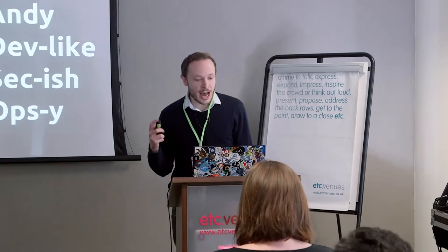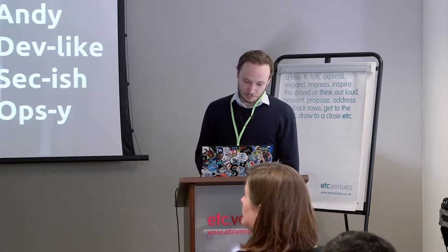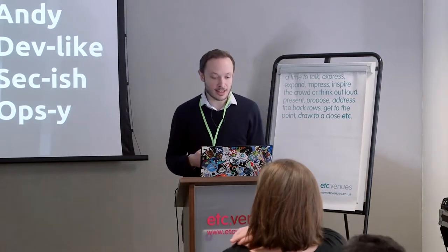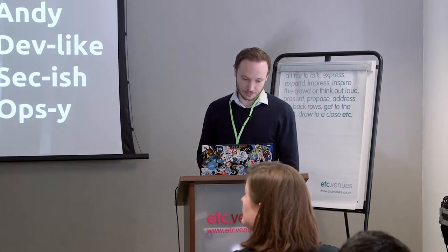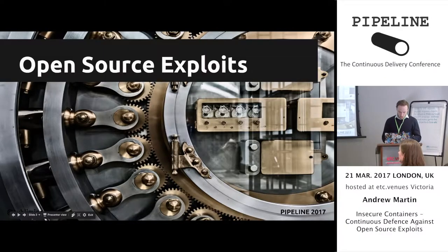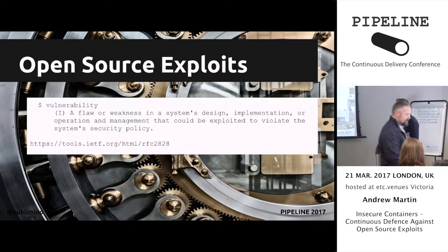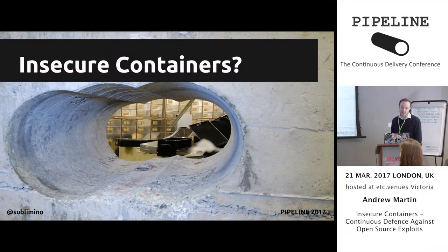I want to talk about how we can protect our users' data when the software that we rely on fails to protect us. I'll start with a high-level description of various attacks and then get into the guts of container security. These slides will be published afterwards. So what are open source exploits? Vulnerabilities in commonly used open source code — a flaw or weakness in a system's design that can be exploited to violate the system's security policy. And the question of insecure containers: do they really contain, what can they contain, and how have they defended against major recent vulnerabilities?